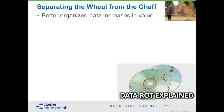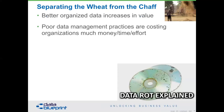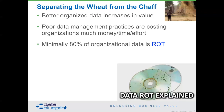We also have to understand two key things about data. Better organized data increases in value. If you have trouble describing this to colleagues, imagine being handed the pages of a book randomly placed in a stack, as opposed to stapled together with a spine — ensuring an architecture that says start at the beginning and go to the end. Bad data management practices are costing organizations enormous time and effort. Compounding this, minimally 80% of your organization's data is ROT — redundant, obsolete, and trivial.